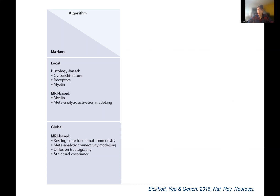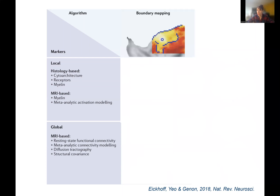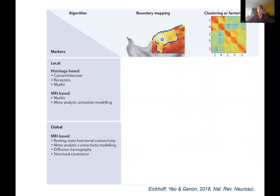We can also distinguish parcellation approaches based on the type of algorithm used. The first parcellation studies based on cytoarchitecture used a border detection or boundary mapping approach — identifying when there is a change in the feature across the brain, indicating borders between different areas. The other approach is a clustering or factorization approach, where we look globally at the data and decompose it into different clusters or factors assumed to represent different networks or brain regions.